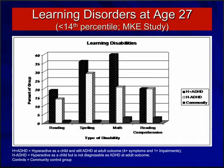This graph reflects the percentage of individuals continuing to have a learning disability at age 27, defined as falling at or below the 14th percentile on standardized academic achievement tests. Comparing persistent ADHD, non-persistent ADHD, and the control group across various learning disabilities measured in the study, individuals with ADHD — whether their ADHD persisted or not — continue to experience a higher rate of learning disabilities than the control group. Learning disabilities appear to be quite persistent over time.